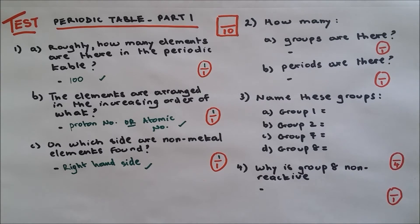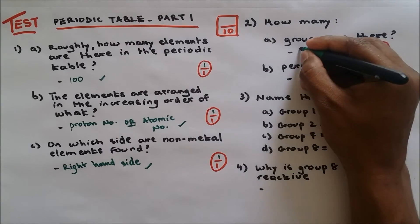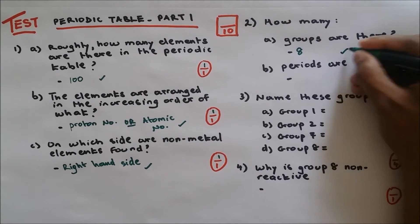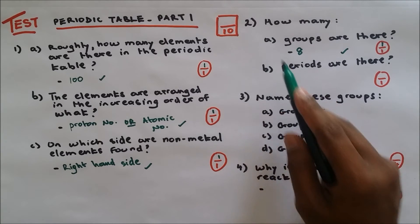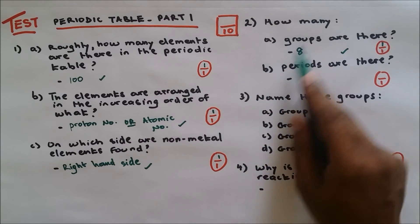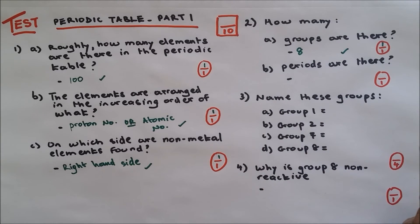So how many groups are there? There are eight groups, one out of one. Part B of the question: how many periods are there in the periodic table? There are seven, one out of one.